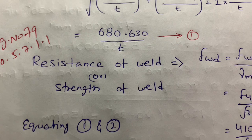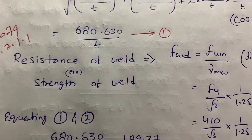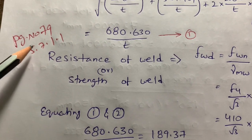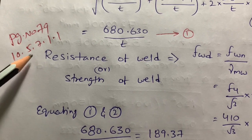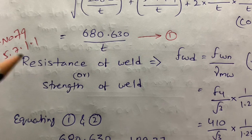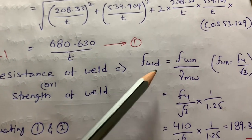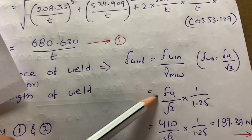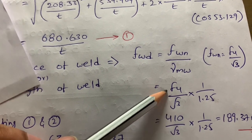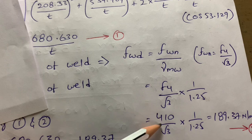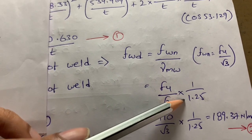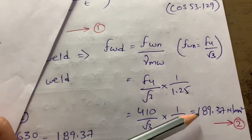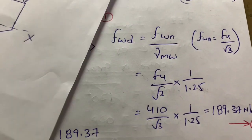Next, we need to find out the resistance of the weld — that is, the strength of the weld. Per IS 800:2007, clause 10.5.7.1.1 (page 79), the code specifies: F_w = F_u / (√3 × γ_mw). F_u is the ultimate stress (410 N/mm²), and γ_mw is the partial safety factor from Table 5, page 30. After calculating, I got 189.37 N/mm². I consider this as Equation 2.